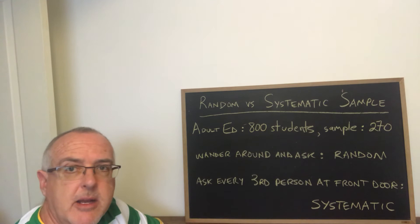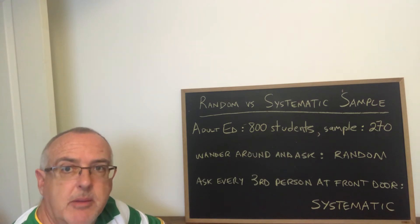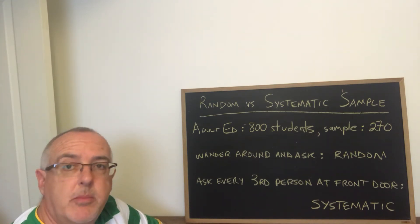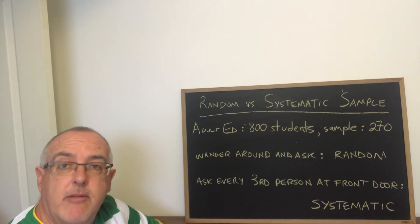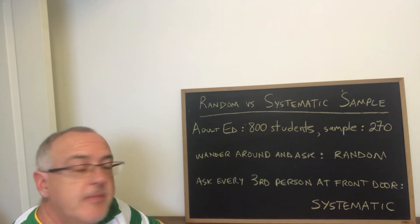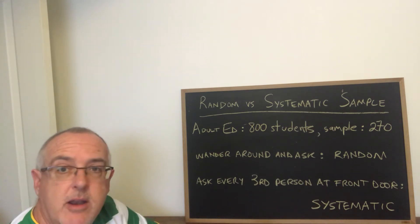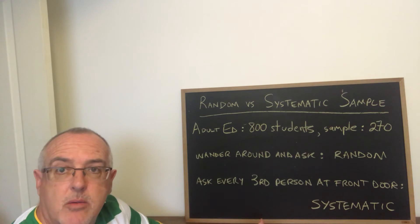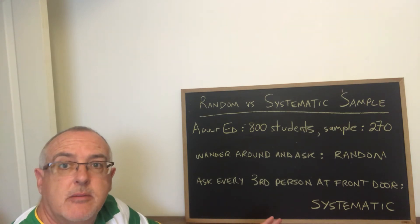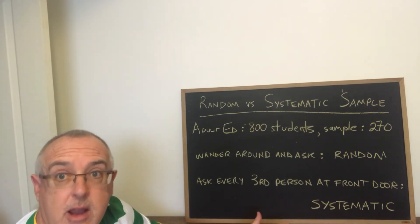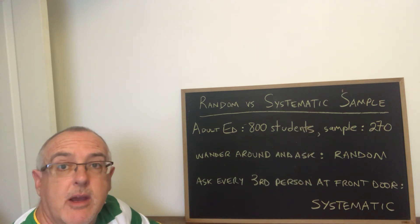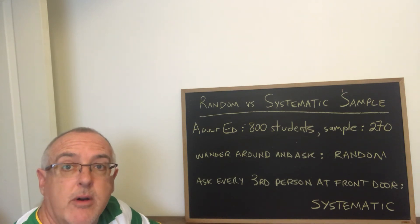Systematic sampling simply means that you ask every third person, or possibly every fifth person, every tenth person, until you have enough. Random — we don't have any plan. We just go to the population and ask people at random until we have enough for our sample.